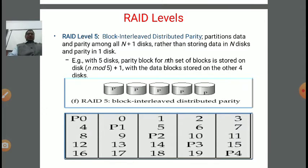In today's lecture, we are discussing RAID level 5. This level of Redundant Array of Independent Disks is based on a technique called block-interleaved distributed parity. In this technique, data and parity are partitioned among all N plus one disks, rather than storing data in N disks and parity in one separate disk.